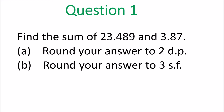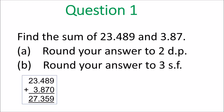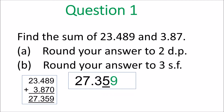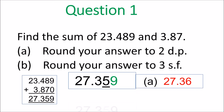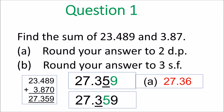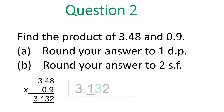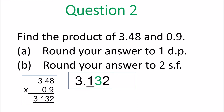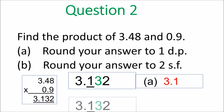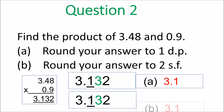Question 1: Find the sum of those two numbers — you add them up, and you get 27.359. Round that to two decimal places: underline the 5, there's a 9 at the back, so you add a 1 — gives 27.36. Now to three significant figures, you're looking at the 2, 7, and 3 — add a 1 to the 3, giving 27.4. Product of 3.48 and 0.9 — you multiply and get 3.132. To one decimal place it becomes 3.1, because there's a 3 after the 1 so you don't change it. To two significant figures, you're looking at the 3 and the 1, so it still stays at 3.1.